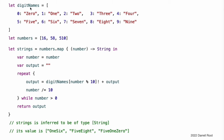The closure expression builds a string called output each time it is called. It calculates the last digit of number by using the remainder operator, number % 10, and uses this digit to look up an appropriate string in the digit names dictionary. The closure can be used to create a string representation of any integer greater than zero. Note: the call to the digit names dictionary's subscript is followed by an exclamation point because dictionary subscripts return an optional value to indicate that the dictionary lookup can fail if the key does not exist. In this example, it is guaranteed that number % 10 will always be a valid subscript key for the digit names dictionary, and so an exclamation point is used to force unwrap the string value stored in the subscript's optional return value. The string retrieved from the digit names dictionary is added to the front of output, effectively building a string version of the number in reverse. The expression number % 10 gives a value of 6 for 16, 8 for 58, and 0 for 510.